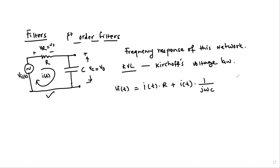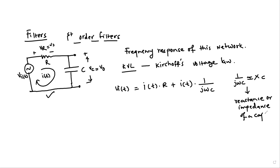We write 1 over jωC because that is Xc, called the reactance or impedance of a capacitor — just like a resistor has resistance, a capacitor has reactance, indicated by 1 over jωC. It can also be written as minus j over ωC. So we know this is the equation, and the output voltage across the capacitor is again the current multiplied by the impedance, which is 1 over jωC.